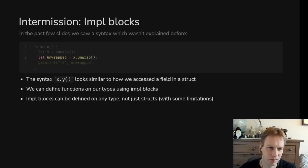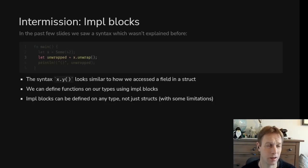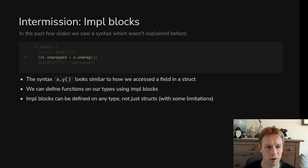Hello and welcome back to Rust 101. My name's Andy, this is video 8 and we're talking today about impl blocks, or how to put methods on types that you have defined.